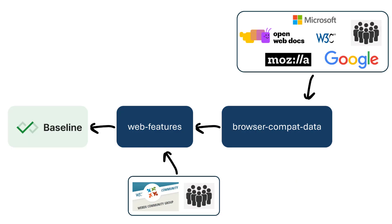Baseline is based on the Web Features Project, and it's computed summary data for each feature of the web. It's essentially the missing piece that will help developers understand what's coming to the web platform, what's newly available, and what's widely available for them to use. Baseline is based on the Web Features Project, which itself is based on the Browser Compat Data Project, which Open Web Docs, Mozilla, other organizations, as well as plenty of individual contributors help maintain.